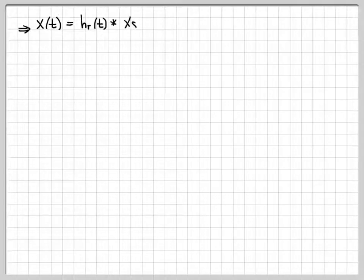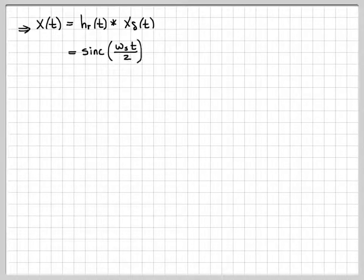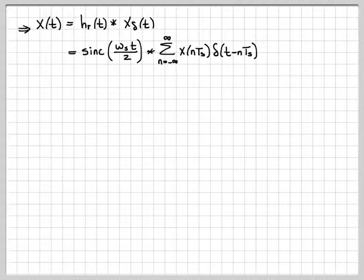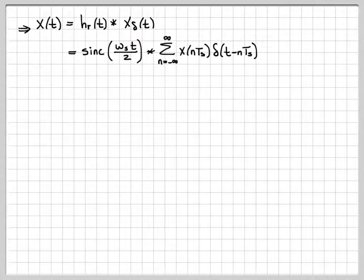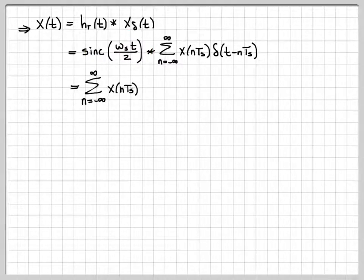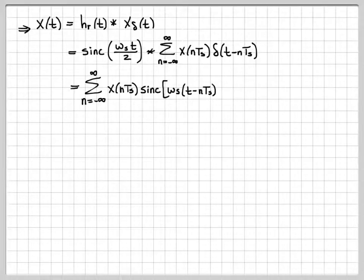Going back to our time-domain equation, x(t) equals the impulse response convolved with the impulse sampled signal. We've found the impulse response is sinc(ωs·t/2), and we convolve it with x_delta(t). We can simplify further: whenever you convolve a signal with a set of impulses, you bring the signal into the sum and evaluate it at t − nTs, replacing every t with t − nTs.